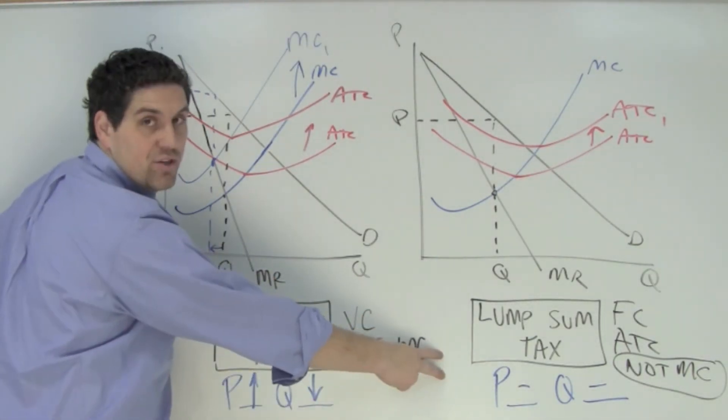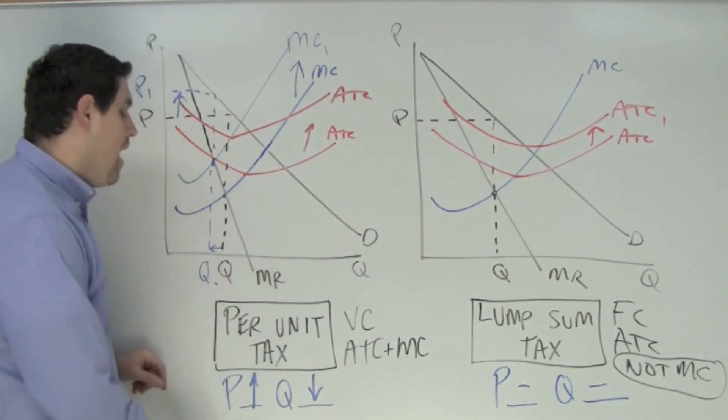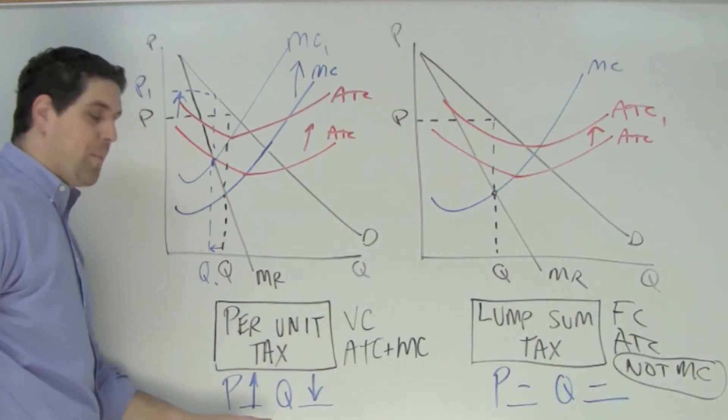A lump sum tax doesn't affect marginal cost, so price and quantity stay the same. A per unit tax does affect marginal cost, so price is going to go up and quantity is going to go down.